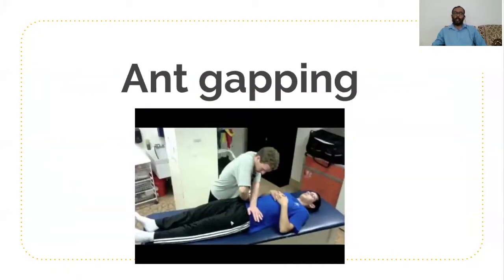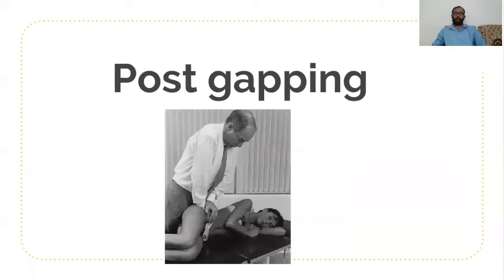The anterior gapping and posterior gapping tests check whether there is a sprain of the sacroiliac ligaments. In anterior gapping, the patient is in supine position and with both hands, the anterior superior iliac spine (ASIS) is opened out towards the opposite side. This tests for anterior sacroiliac ligament sprain. In posterior gapping, both ASIS are compressed; this is done in lateral position, either left or right lateral, and with the support of the table, one sacroiliac joint is compressed.